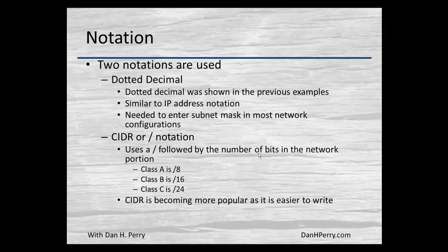There's another notation called CIDR, or slash notation — you show the IP address followed by a slash and then the number of bits that are in the network portion. This is a real nice shorthand way of representing the subnet mask, and it's so much easier and quicker to write that it's becoming very popular.